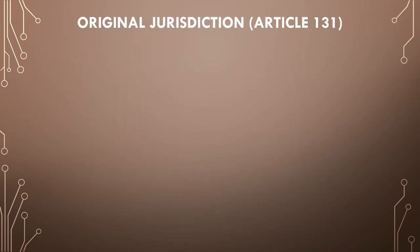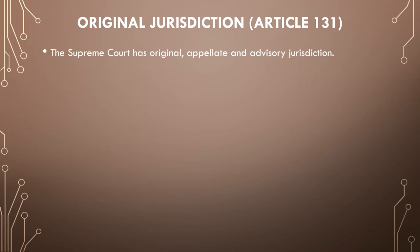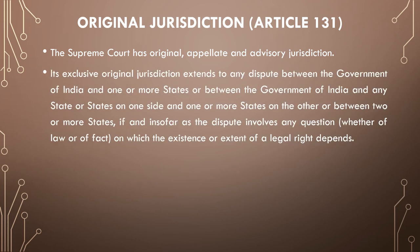The first jurisdiction is under Article 131 of the Indian Constitution, which says the Supreme Court has original, appellate, and advisory jurisdiction. Its exclusive original jurisdiction extends to any dispute between the Government of India and one or more states, or between the Government of India and any state or states on one side and one or more states on the other, or between two or more states, if the dispute involves any question of law or fact on which the existence or extent of a legal right depends.